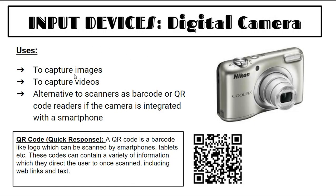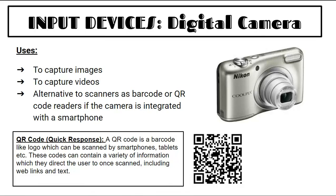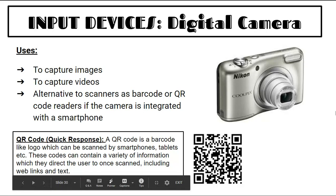A digital camera is used to capture images and video. It's an alternative to scanners as a barcode or QR code reader when integrated with a smartphone. A QR code (quick response code) is a barcode-like logo scanned by smartphones and tablets — it can contain web links and text, directing users to websites. Apps like SnapScan use QR codes to process payments.